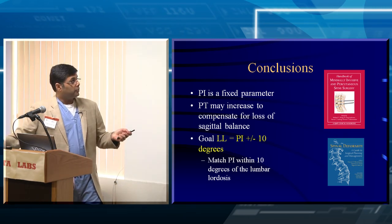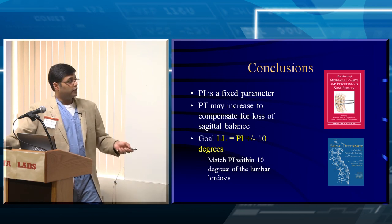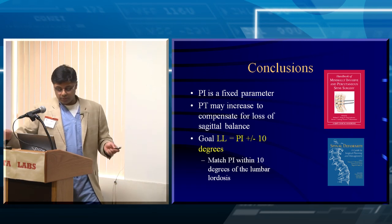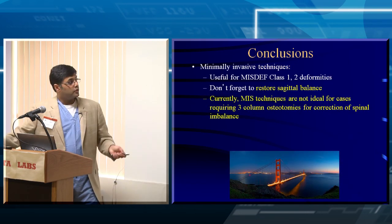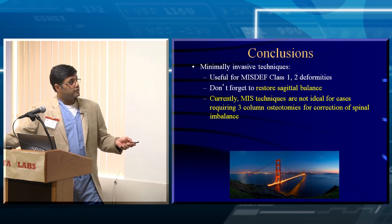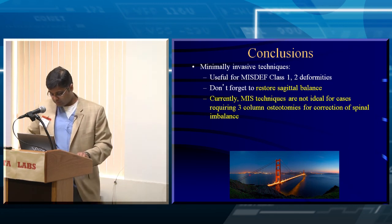The take-home points: PI is a fixed parameter, pelvic tilt is a temporary compensating mechanism. You must have the same sagittal balance goals whether you do it open or MIS — if you're not going to achieve them, don't do it MIS. You need to be in the class one or two deformity category. You want to match PI within ten degrees of lumbar lordosis and get SVA corrected within 5 centimeters. MIS is helpful for mild to moderate deformities, you must restore sagittal balance, and it's not great for cases that currently need a three-column osteotomy to achieve correction.